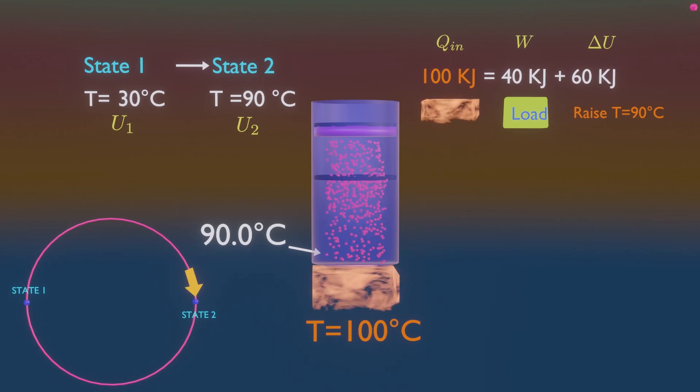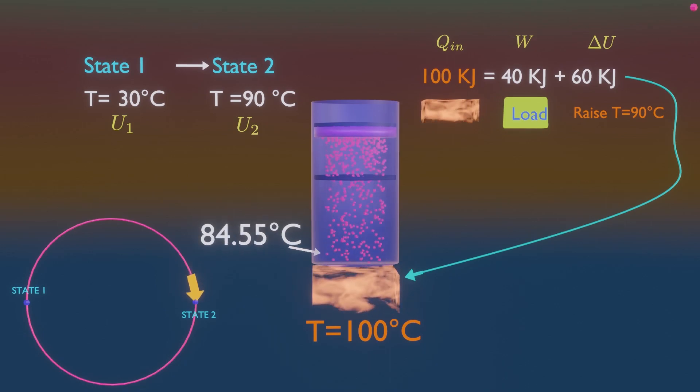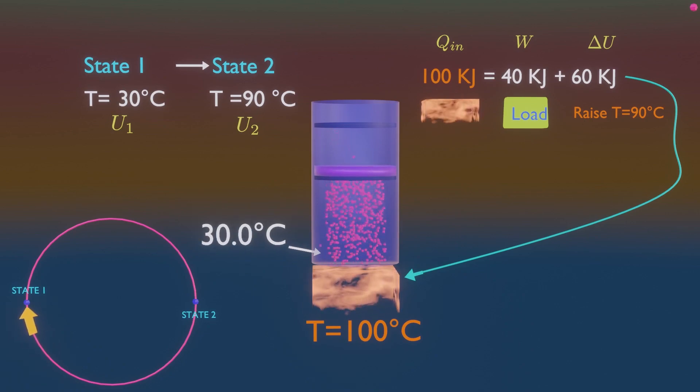Now let us try to answer this question: Is it possible to transfer the 60 kilojoules of excess heat at 90 degrees Celsius back to the reservoir at 100 degrees Celsius for later use? I mean cooling this gas from 90 degrees Celsius to 30 degrees Celsius by conserving the 60 kilojoules of heat and returning to initial state and complete the cycle.